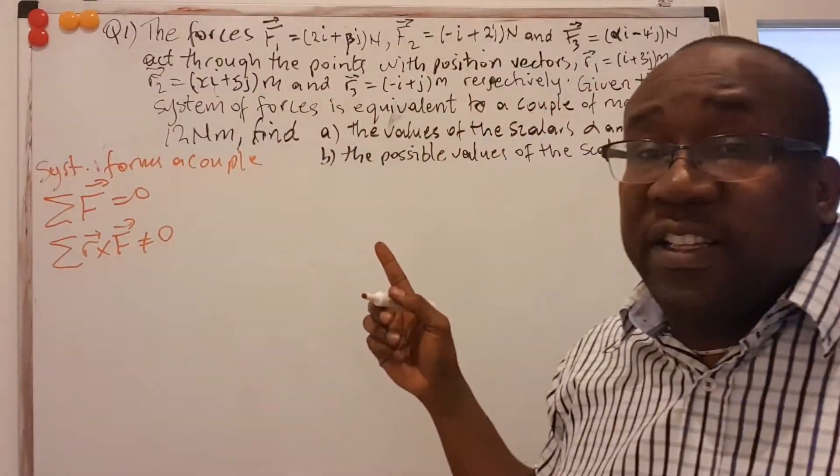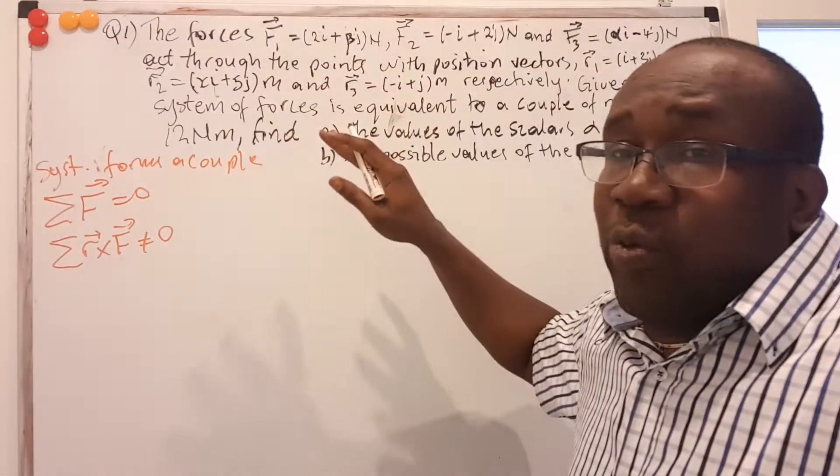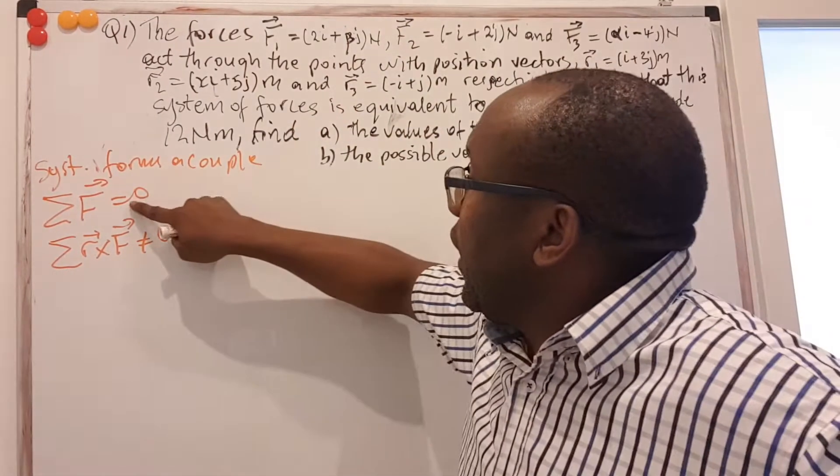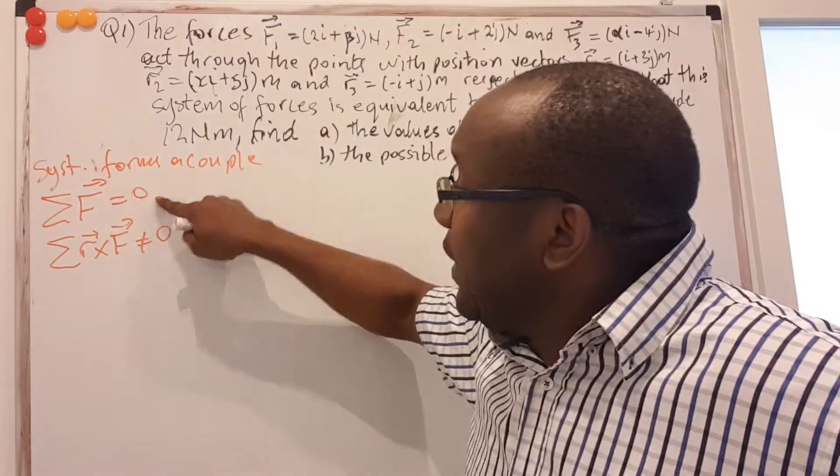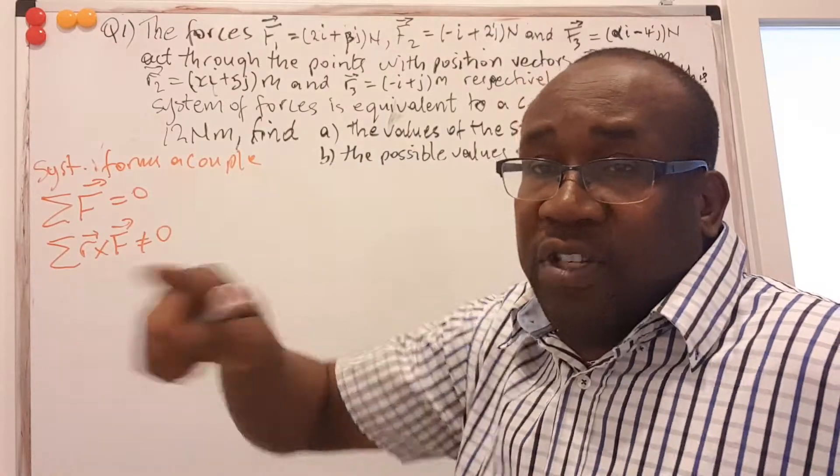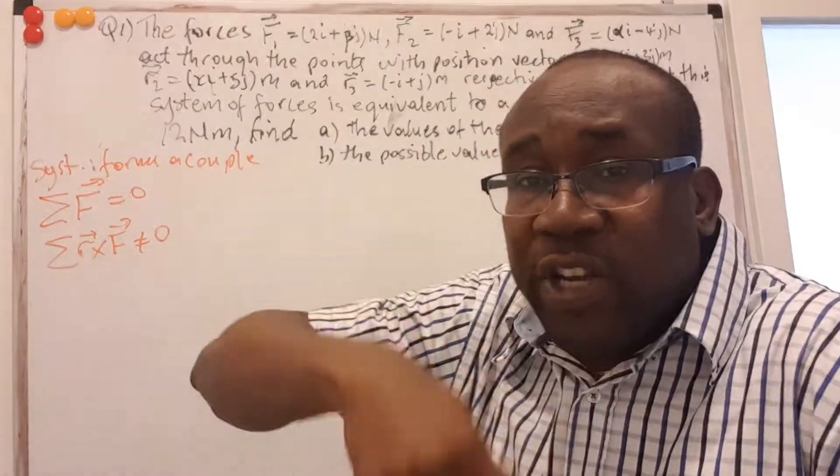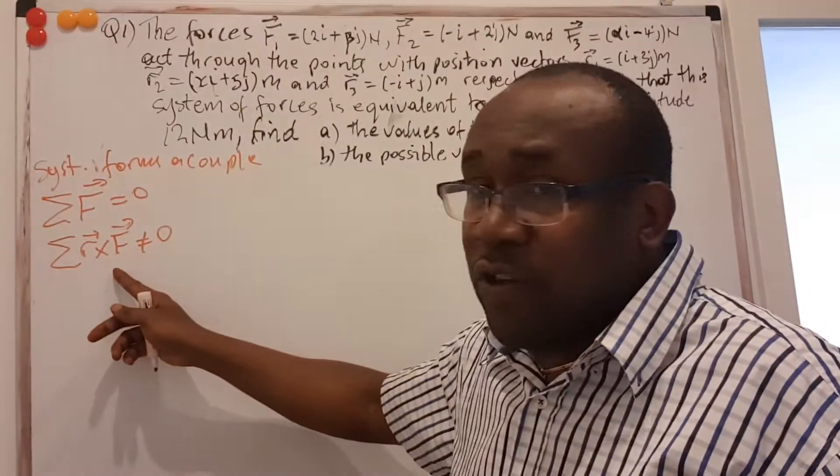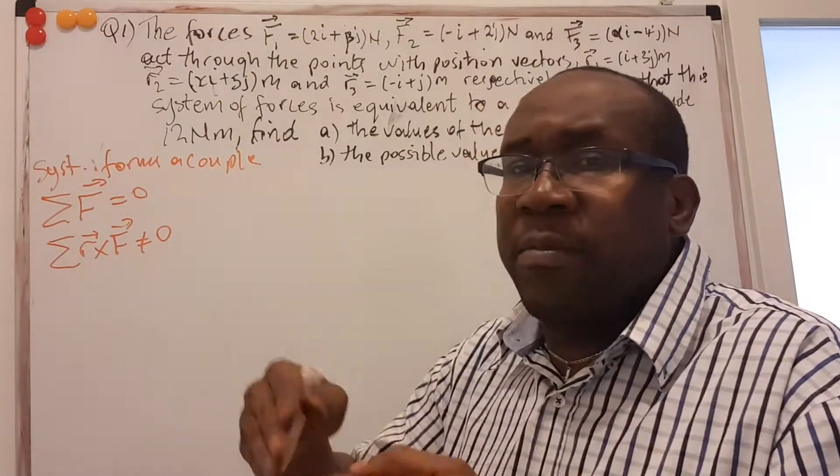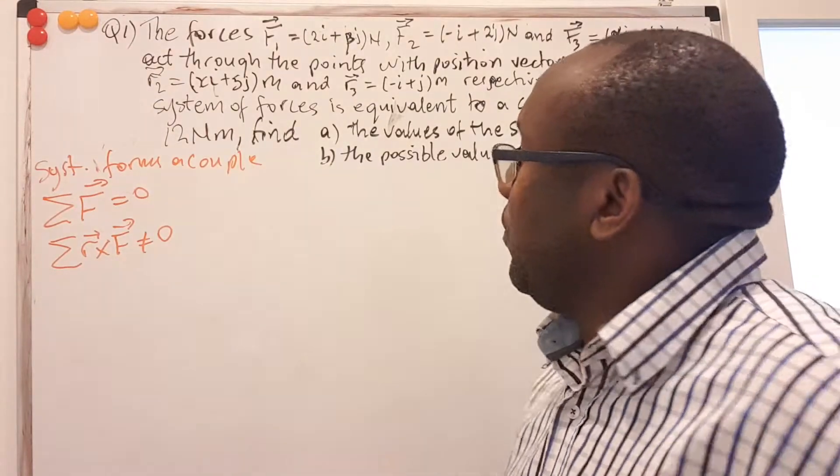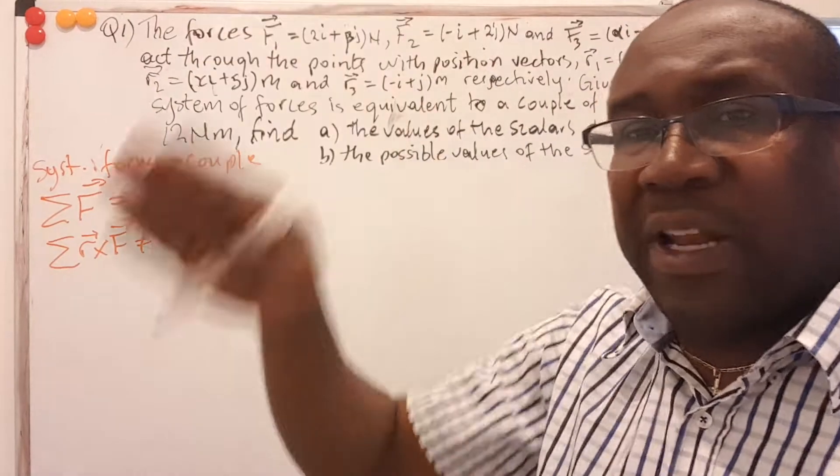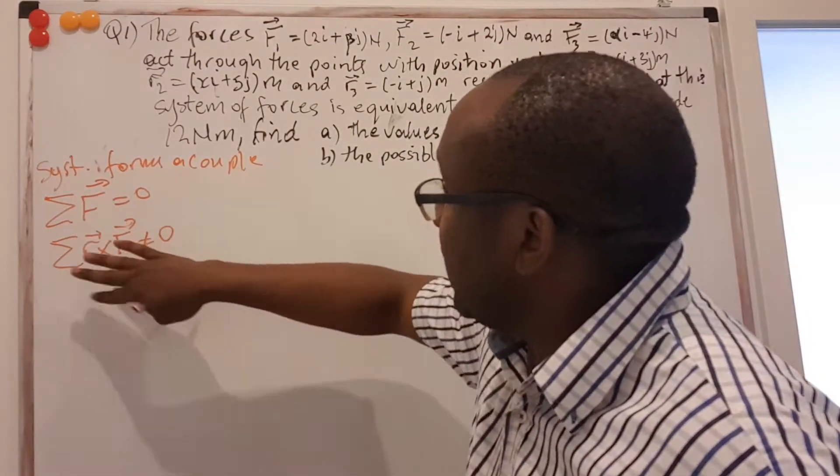So sometimes you can get the same question, but you are asked to show that the system forms a couple. Then you have to check that the sum of those forces is equal to zero first, and that the sum of the moments of those forces, that is the turning force, the effects. So the force results in a rotation instead of moving. So that rotation caused by the force is called the moment of the force. Usually the force times the perpendicular distance to the axis of rotation.